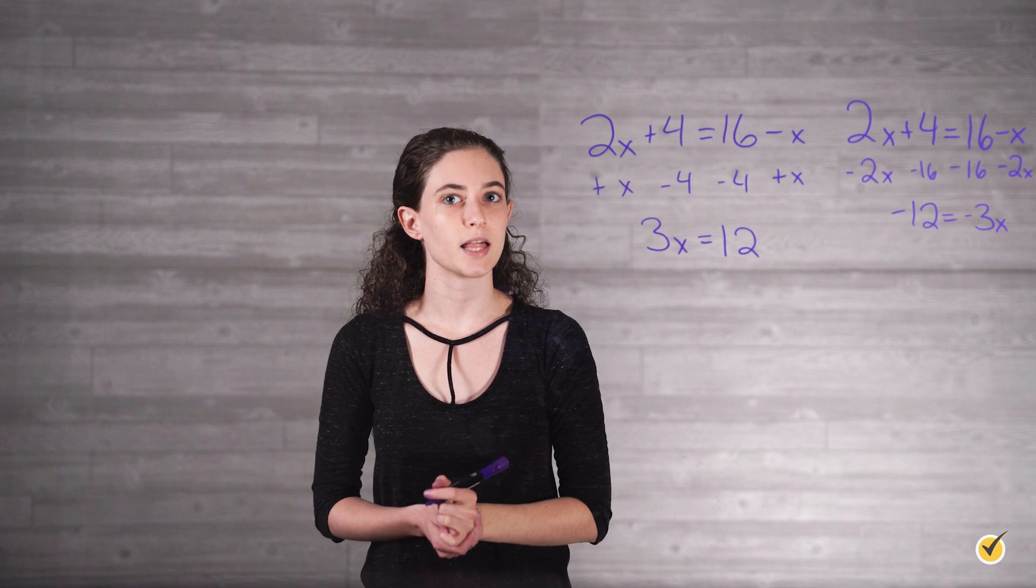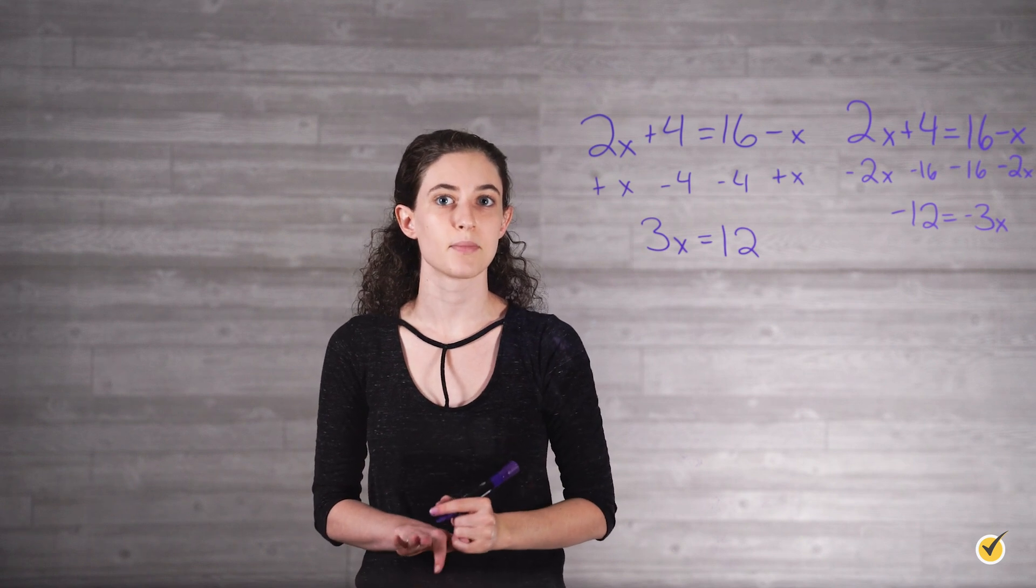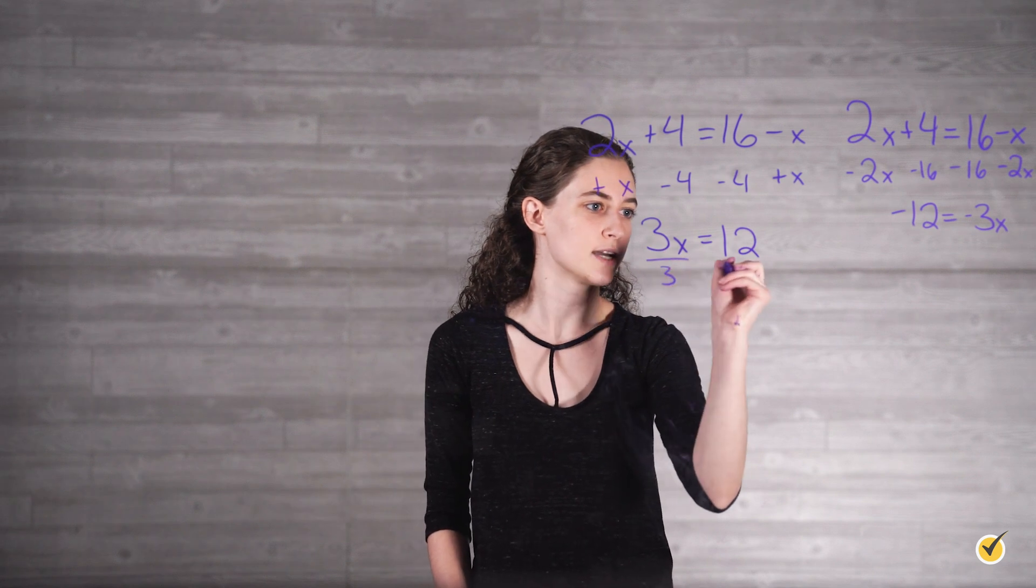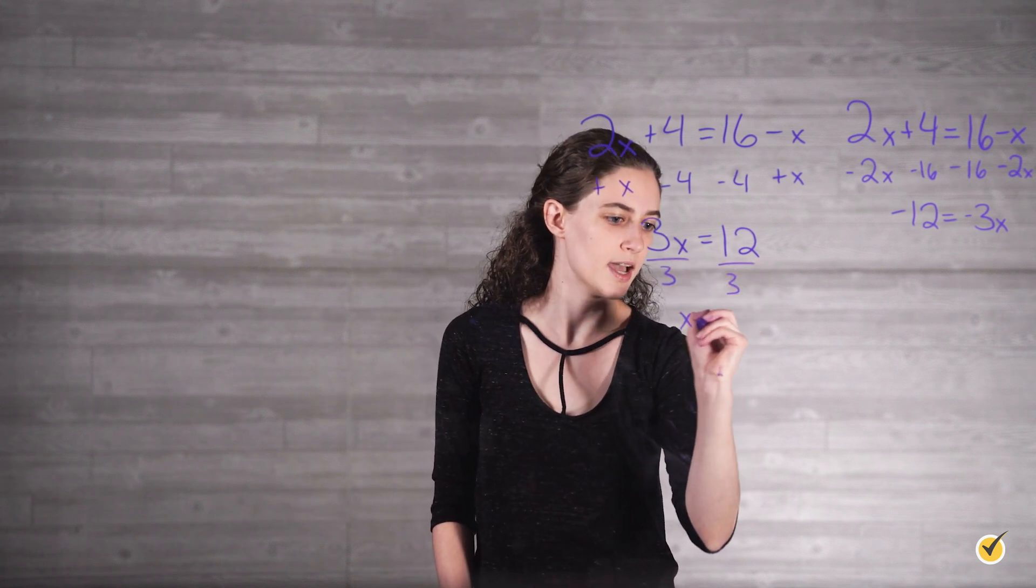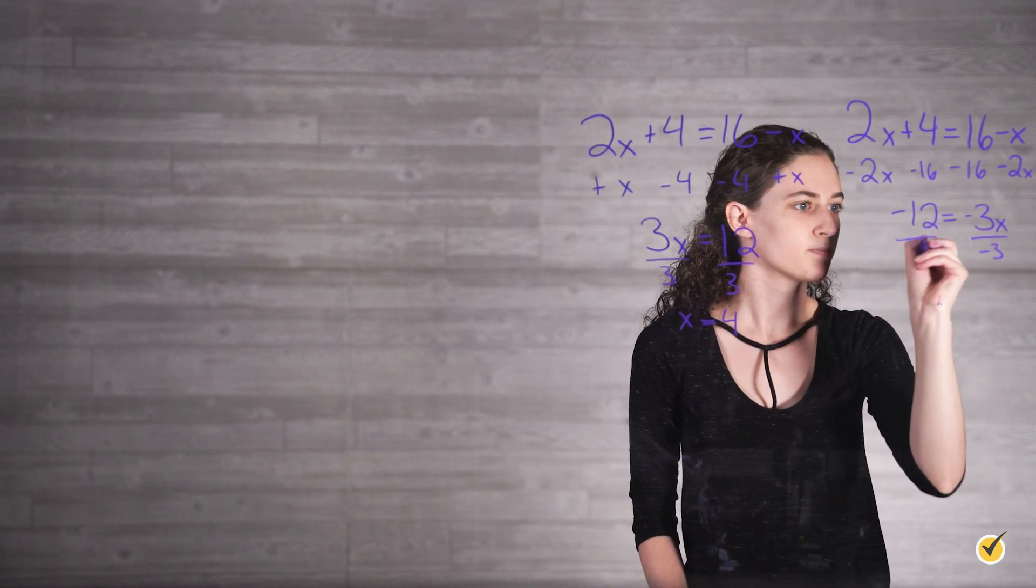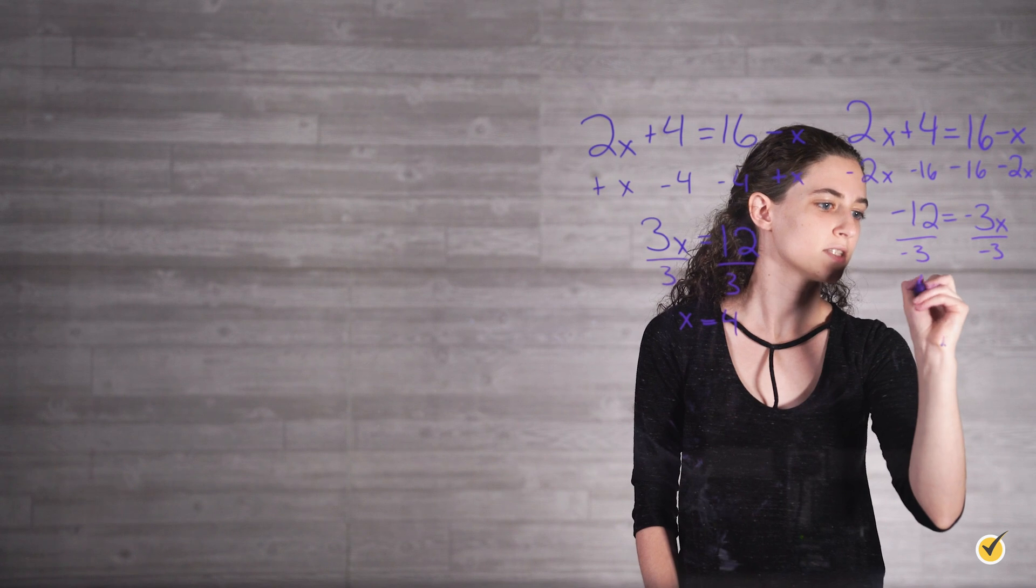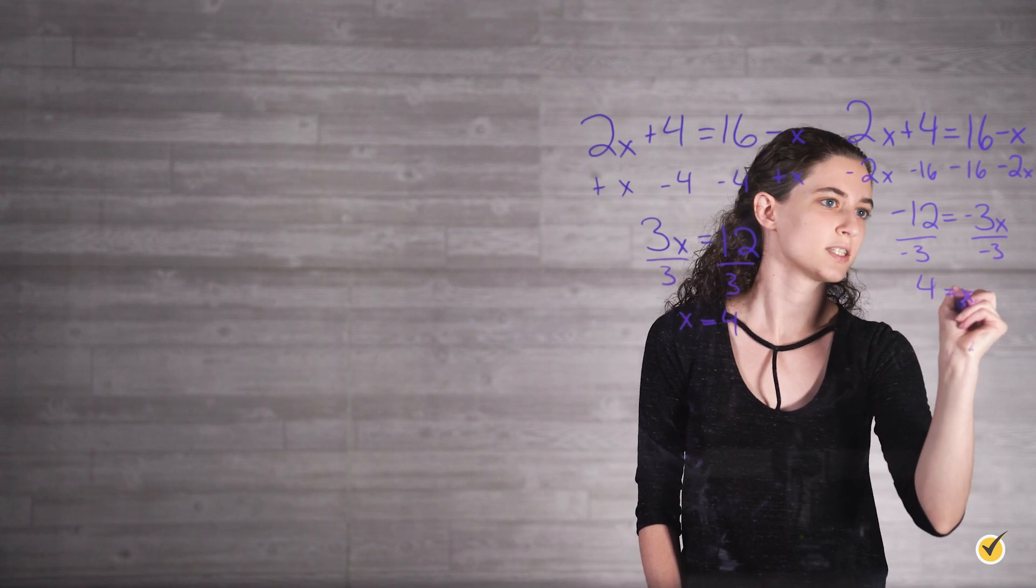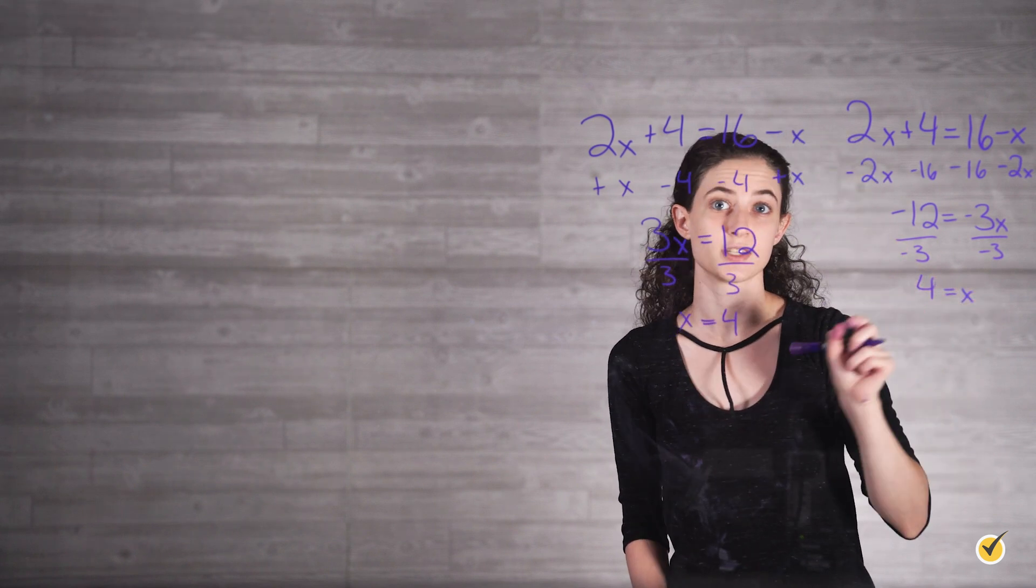Regardless of the steps to combine the like terms, the solution is the same: x equals 4. Divide by 3 on both sides and we get x equals 4. And here, divide by negative 3 on both sides again gives us x equals 4, since dividing a negative by negative results in a positive.